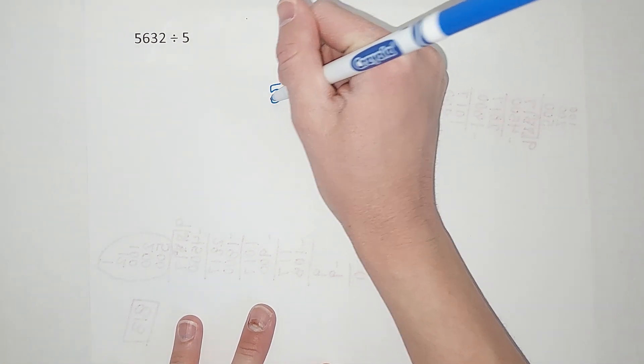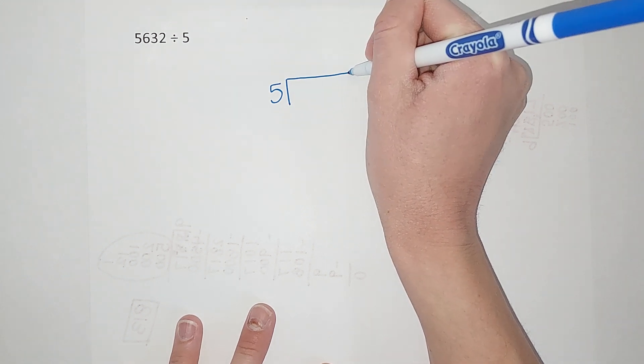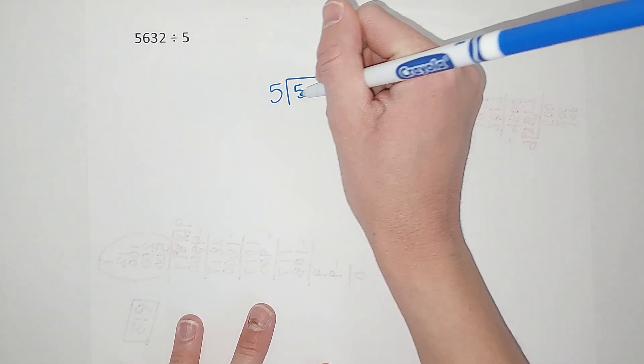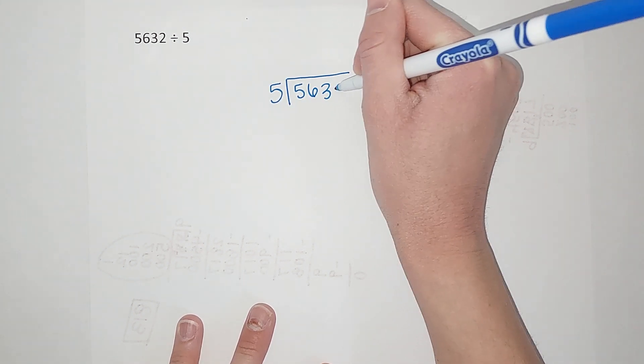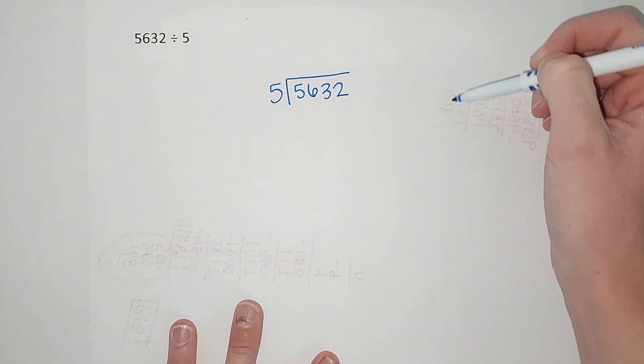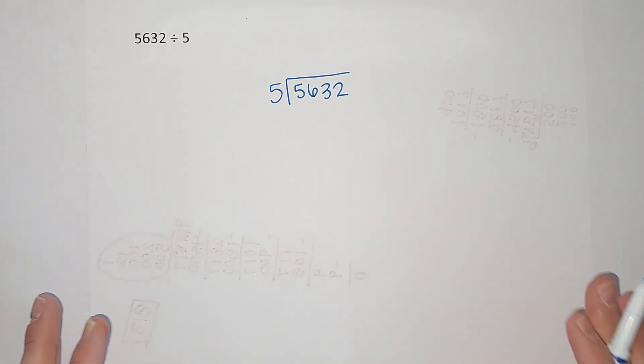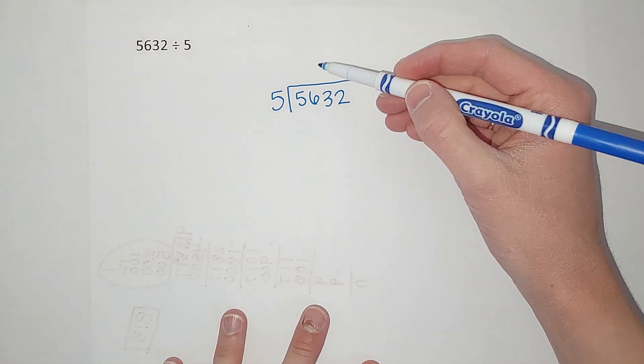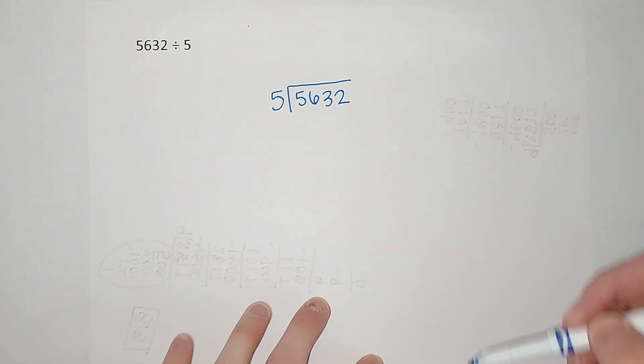We're going to start out and it's going to look very familiar. We're dividing 5 into 5,632. Now some ways I'll have you draw a long line here and write the numbers over here. That's totally fine. Just my personal preference is I like to write it above, but if you want to do the side thing that's fantastic.